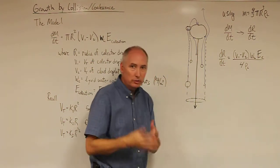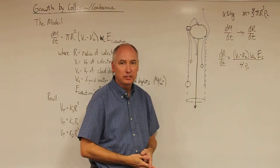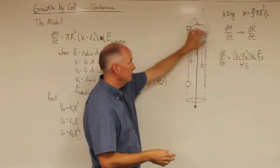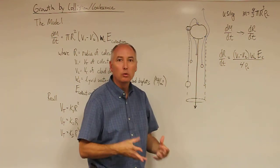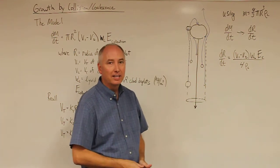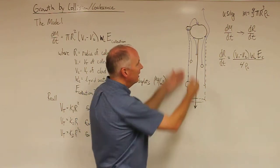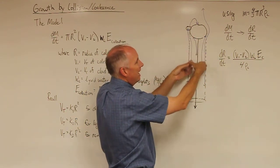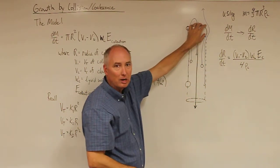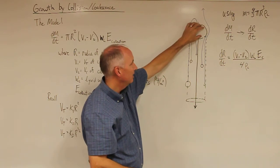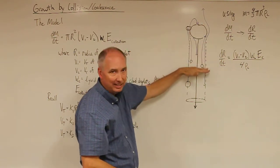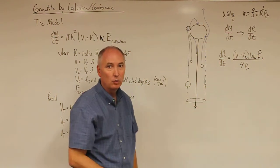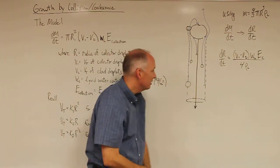Interestingly, the collection efficiency of a collector droplet does not equal one. A collection efficiency of one would mean the collector droplet collects everything within the volume swept out — but that is not the case.